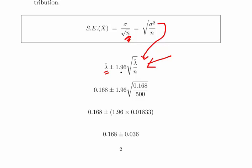So, 0.168 plus or minus 1.96 times the square root of 0.168 divided by 500. Working it out, we should get this answer: 0.168 plus or minus 0.036.